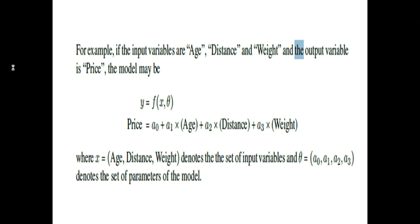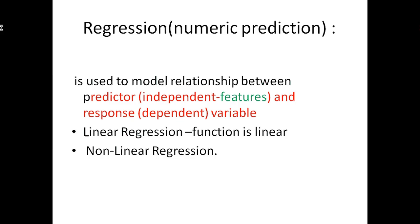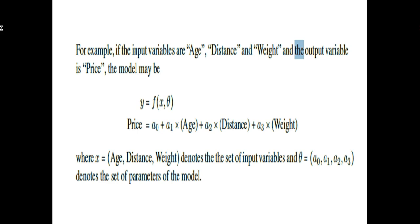There is another example: age, distance, and weight are features, and we are predicting a price as the product. The price is the response variable — the y variable. The number of y variables corresponds to the number of predictors.